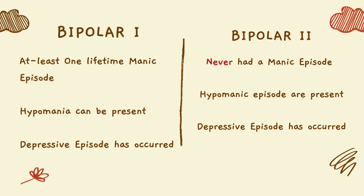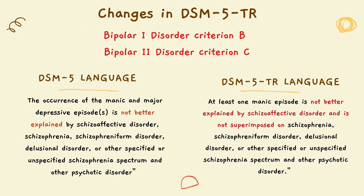For a diagnosis of Bipolar 1, at least one lifetime manic episode must be present; hypomania can be present and a depressive episode has occurred. For Bipolar 2, there has never been a manic episode — hypomania is the primary symptom — and a depressive episode has occurred. That is the key difference between Bipolar 1 and Bipolar 2.